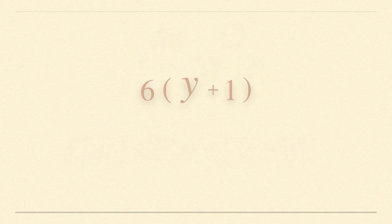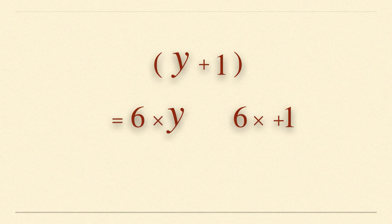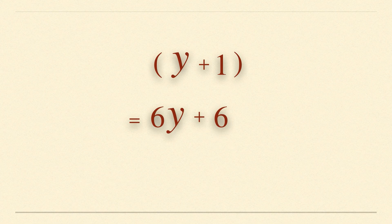We can now use a similar technique to multiply this bracket out. Multiply all the terms inside the bracket by the term outside the bracket. 6 times y is 6y and 6 times 1 is 6.